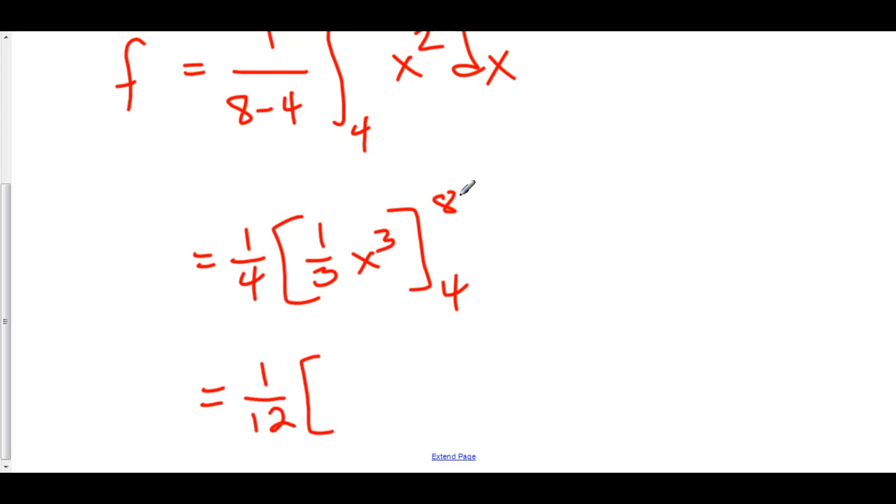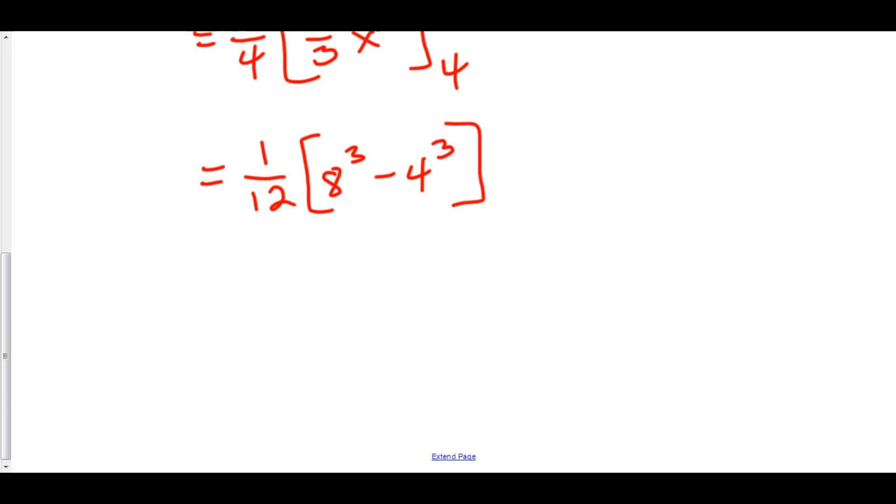And now let's plug in our 8. We've got 8 cubed minus, we'll plug in our 4, now we've got 4 cubed. 8 cubed minus 4 cubed, you can use a calculator or you can do it out. That's equal to 448. And 448 divided by 12 is equal to 37.3333333 bar.